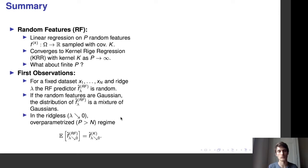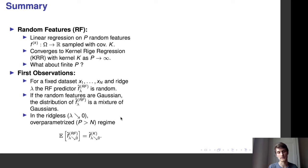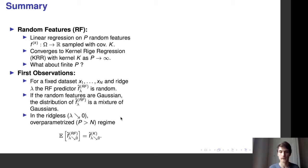It turns out that if the random features are Gaussian, then the distribution of the random feature predictor is a mixture of Gaussians — that's our first result. A consequence is that in the ridgeless regime, when λ goes to zero, and when p is bigger than n, the expected random feature predictor equals the kernel predictor even for finite p. This shows that in this specific parameter regime, the random feature predictor is an unbiased estimator for the kernel predictor.